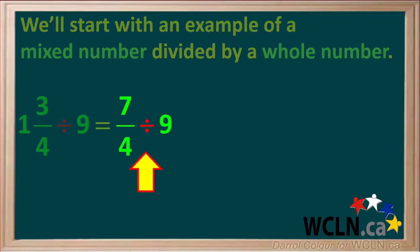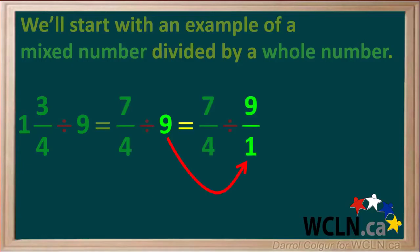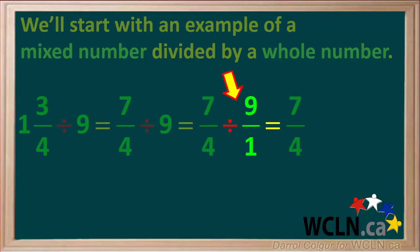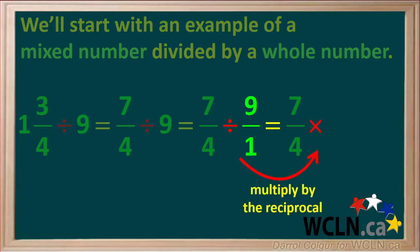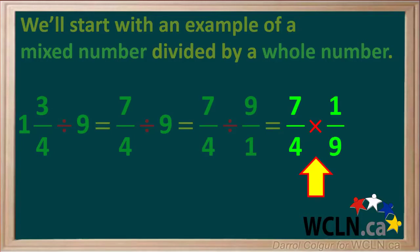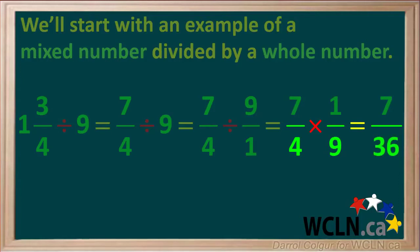The question now is 7 quarters divided by 9. Since 9 is the same as 9 over 1, the question becomes 7 over 4 divided by 9 over 1. Dividing by 9 over 1 is the same as multiplying by its reciprocal, which is 1 over 9. So we have 7 over 4 times 1 over 9. We can't simplify the diagonals, so the numerator is 7 times 1, which is 7, and the denominator is 4 times 9, which is 36. Our final answer is 7 over 36.